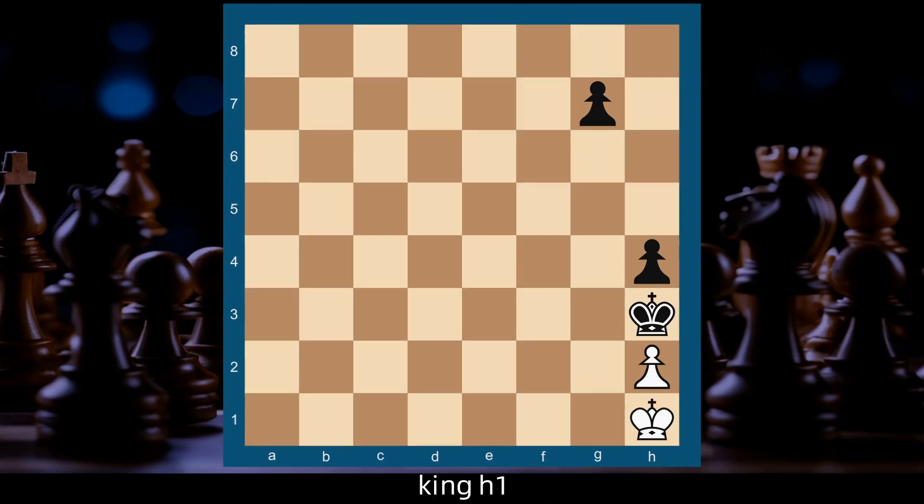King h1, g5, King g1, g4, King h1, g3, h takes g3.